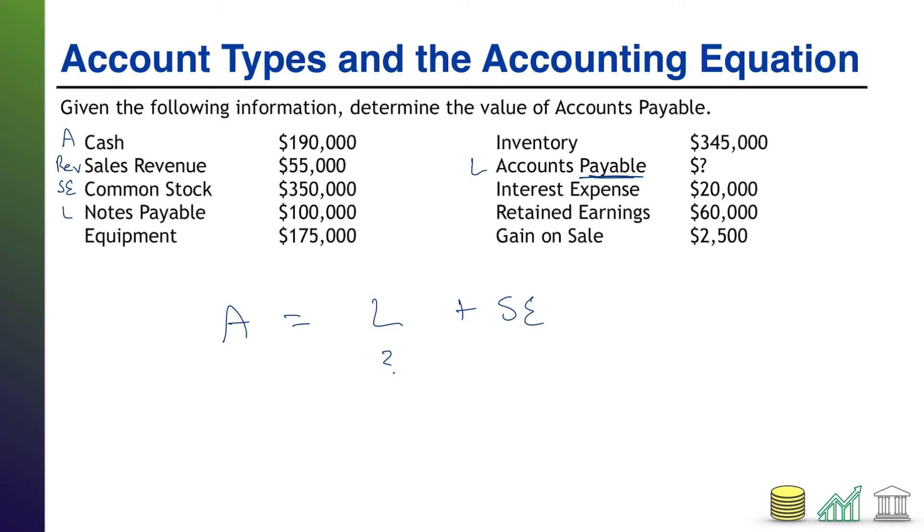Notes payable. Again, that word payable gives it away, liability. Equipment, something you own that has value. That's an asset. Inventory, something else you own with value. That's an asset.